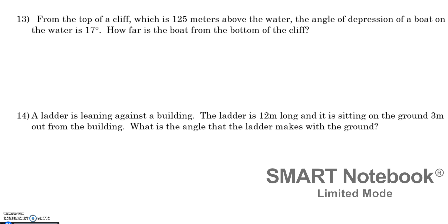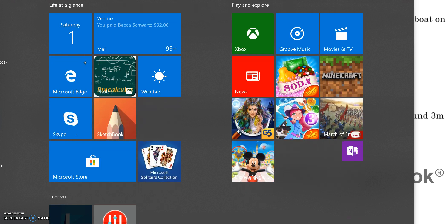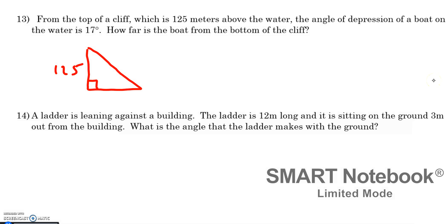Number 13, from the top of a cliff, which is 125 meters above water, let me draw a right triangle, 125 meters above water, the angle of depression of a boat on the water is 17 degrees. How far is the boat from the bottom of the cliff? So we're trying to find how far the boat is. Let's say the boat's down here on the water. We're trying to find this distance from the boat to the bottom of the cliff. The only question is, where is the angle of depression?